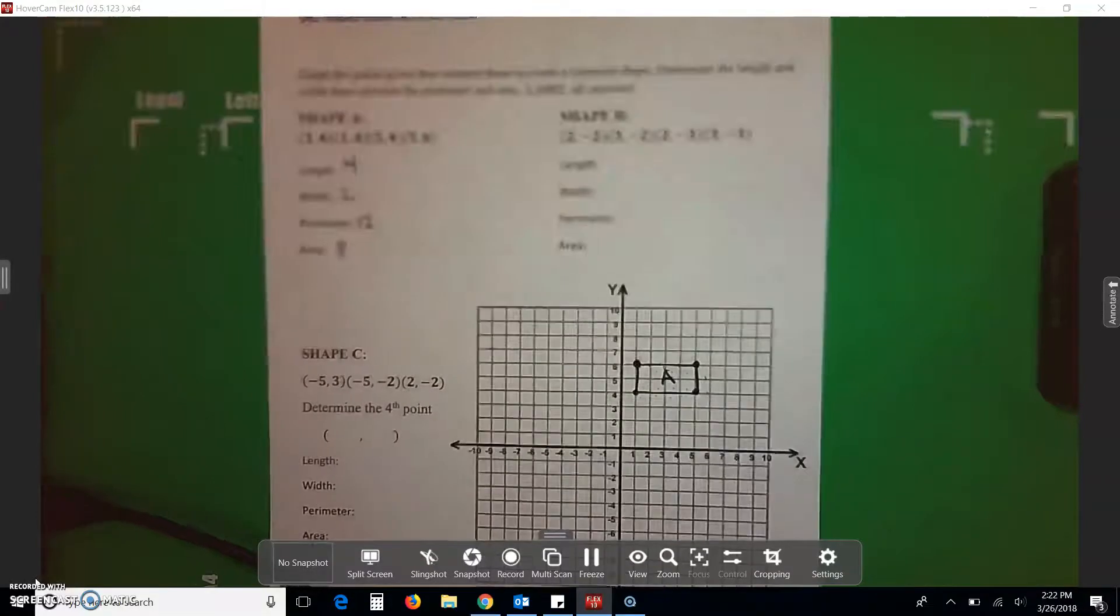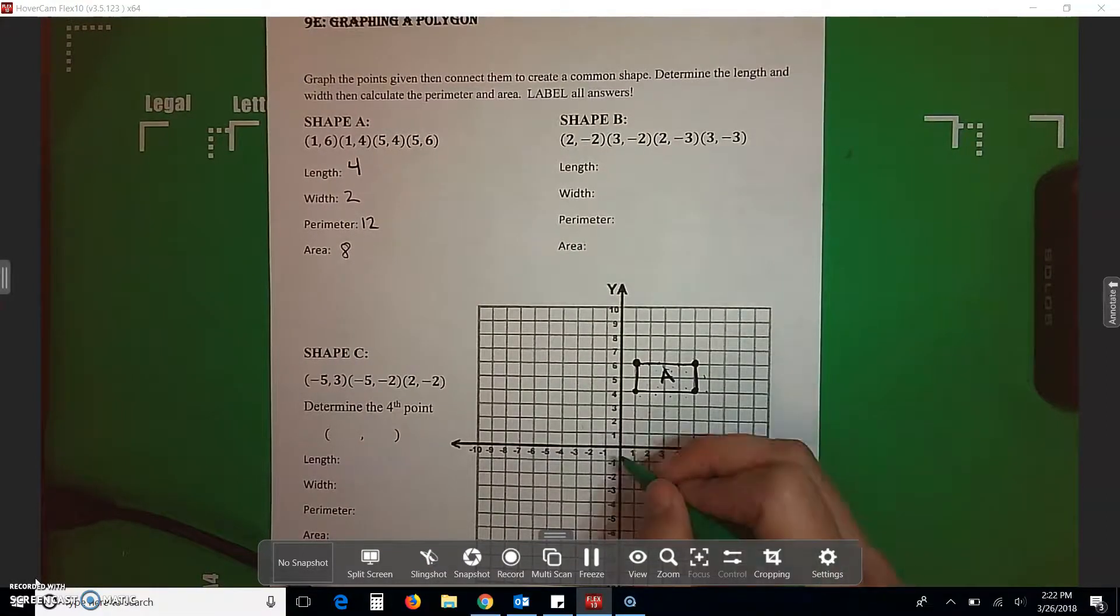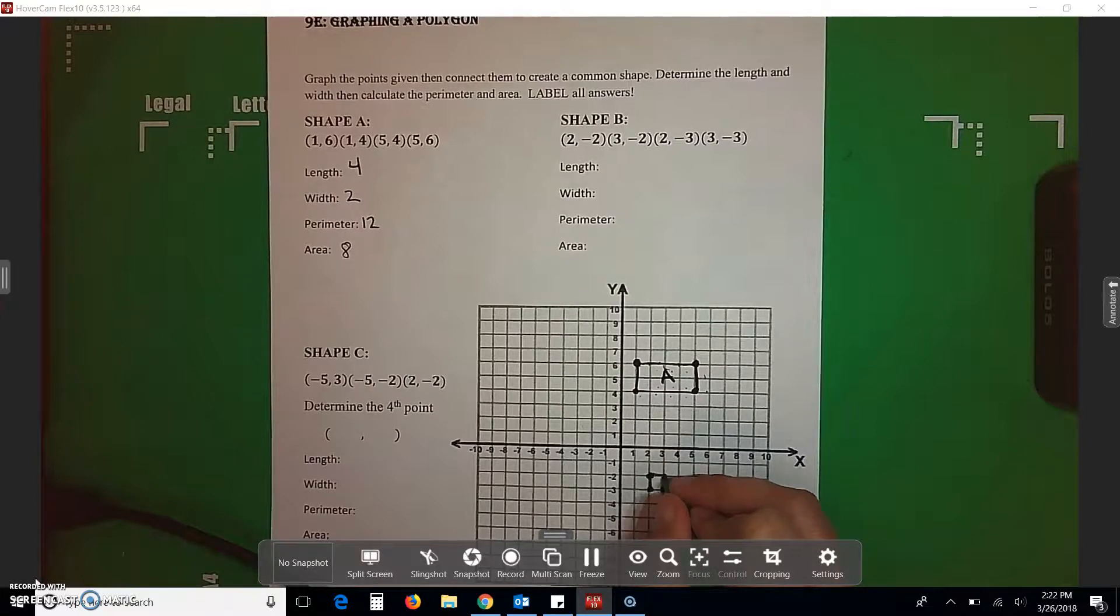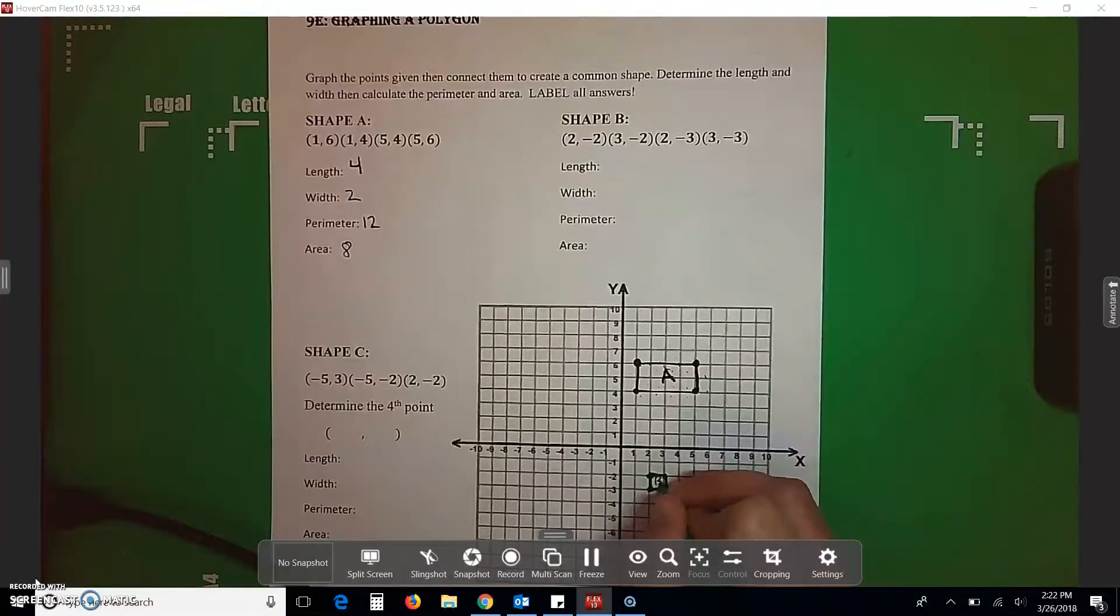Now, we go to shape B. Positive 2, negative 2. Positive 3, negative 2. Positive 2, negative 3. Positive 3, negative 3. So, that is shape B.